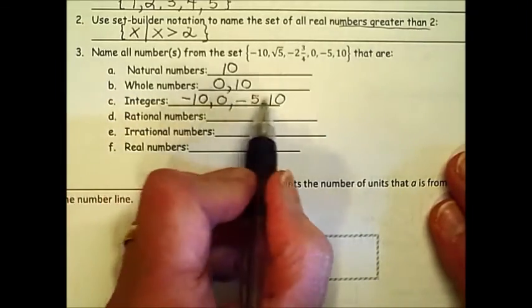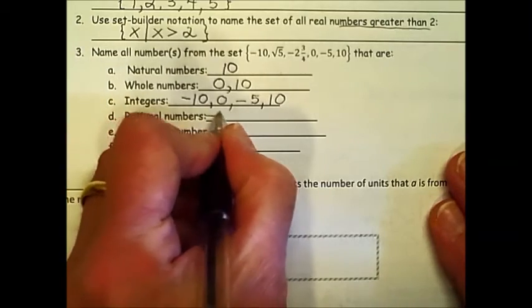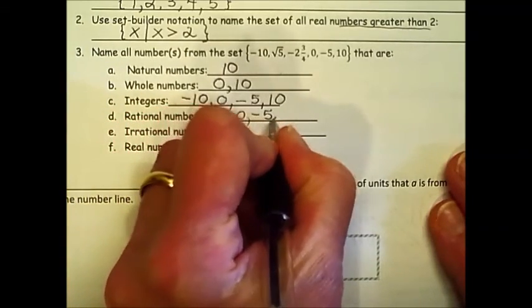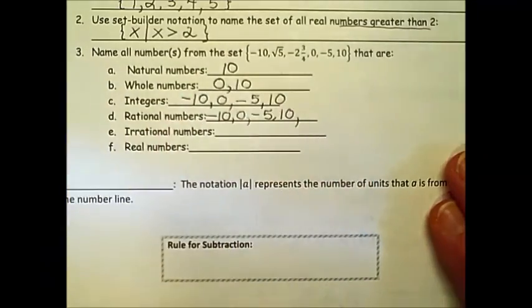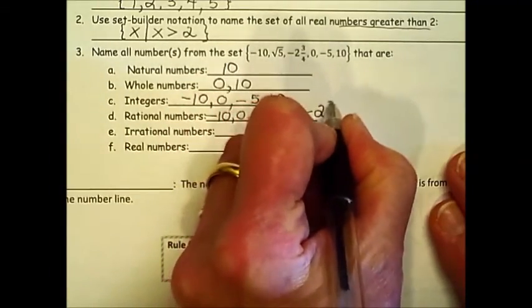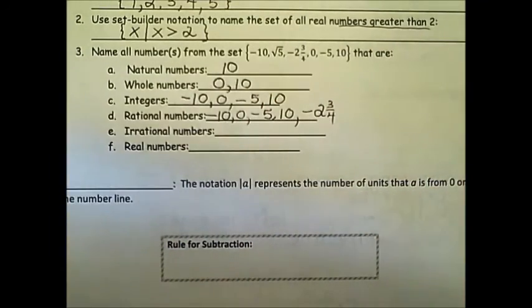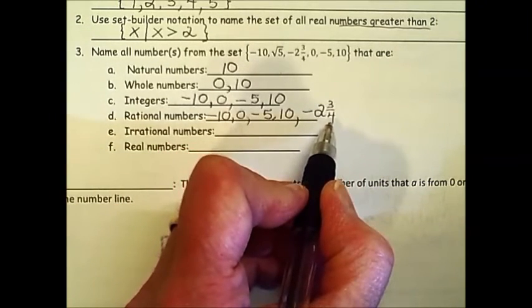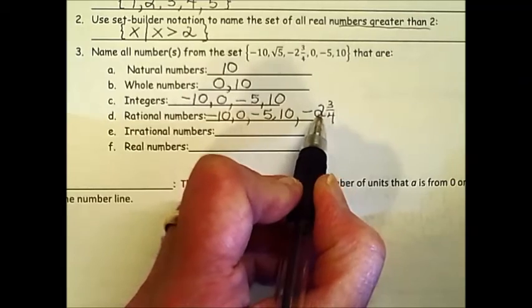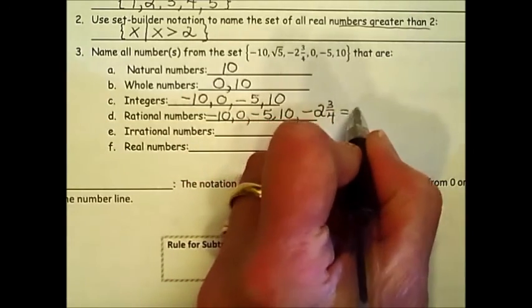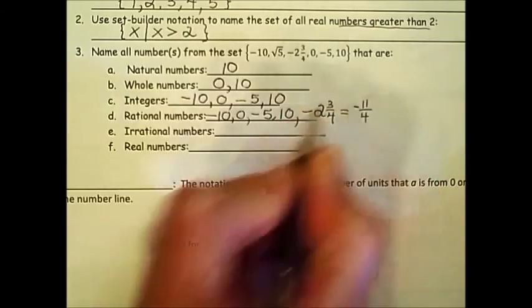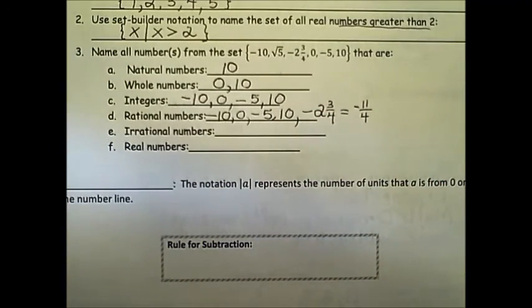Rational numbers, all of these numbers qualify as rational numbers, so they will be in the list. And then we can include that fraction. Negative 2 and 3 fourths is a rational number. And the definition of a rational number was the set of all p over q. Well, we can convert this mixed number into an improper fraction. By taking the denominator 4 times 2 is 8 plus 3 gives us 11 fourths, and it's a negative. So it looks more like a rational number, at least according to the definition.